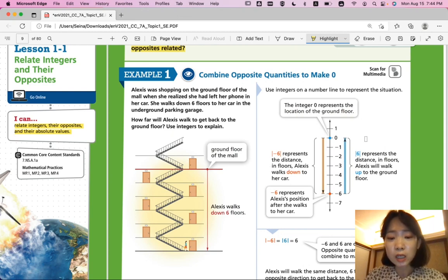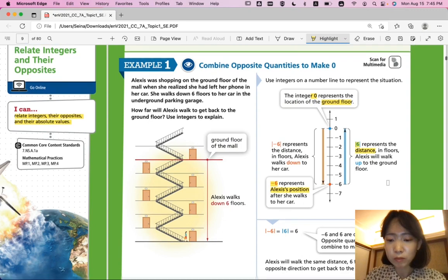So this is the ground floor of the mall. Alexis walks down six floors to her car. So in order to walk back to the ground floor, how many floors does she have to go? So you can represent the integers on a number line. The integer zero here represents the location of the ground floor. So zero is the ground floor.